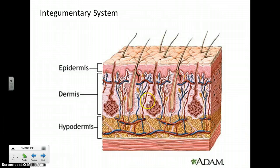Nerve tissue in the skin, of course, receives signals — you can tell when someone touches you. Connective tissue holds your skin to your body, and then muscles below that.